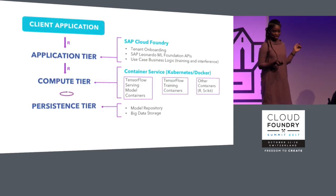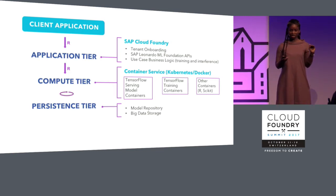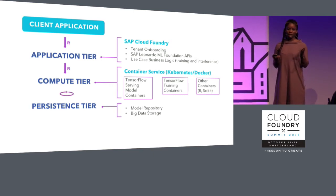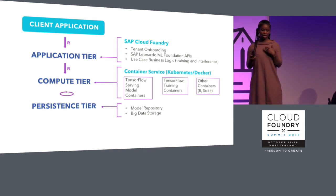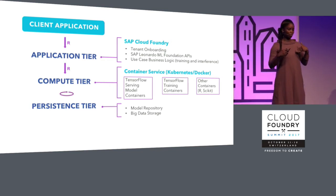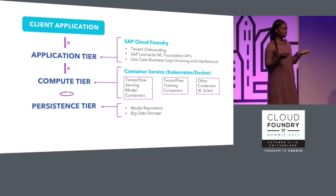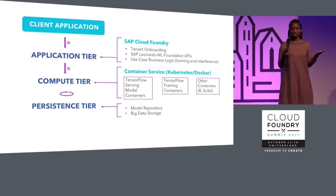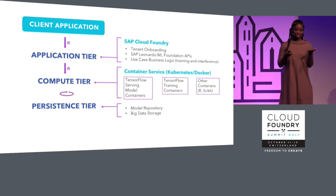Our architectural diagram has three tiers: the application tier, the compute tier, and the persistent tier. Cloud Foundry hosts the application tier, which includes tenant onboarding, APIs, and use case logic. For tenant onboarding, we leverage Cloud Foundry's security features to bring customers onto our platform. Our APIs are what enterprise applications and developers use to consume what we offer. The business logic differs per model type — for instance, you can have business logic for image classification or linear regression — and this is the gateway to the compute tier.